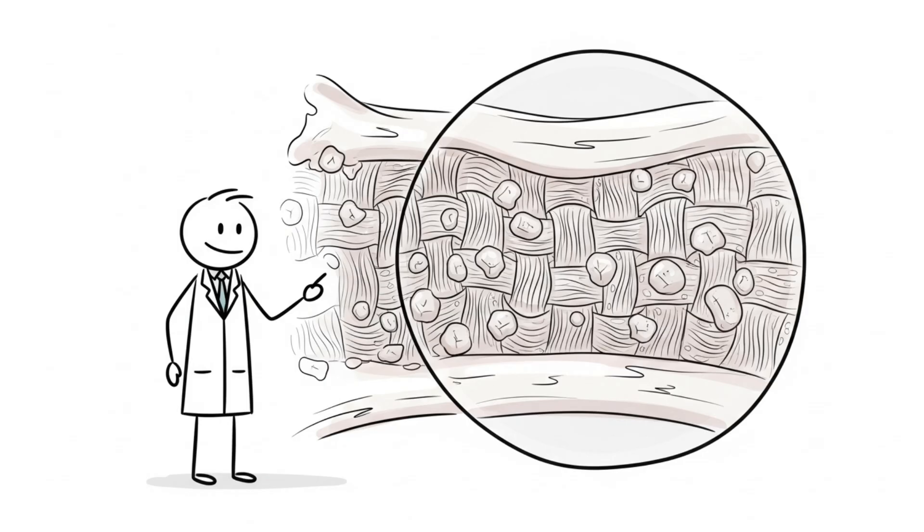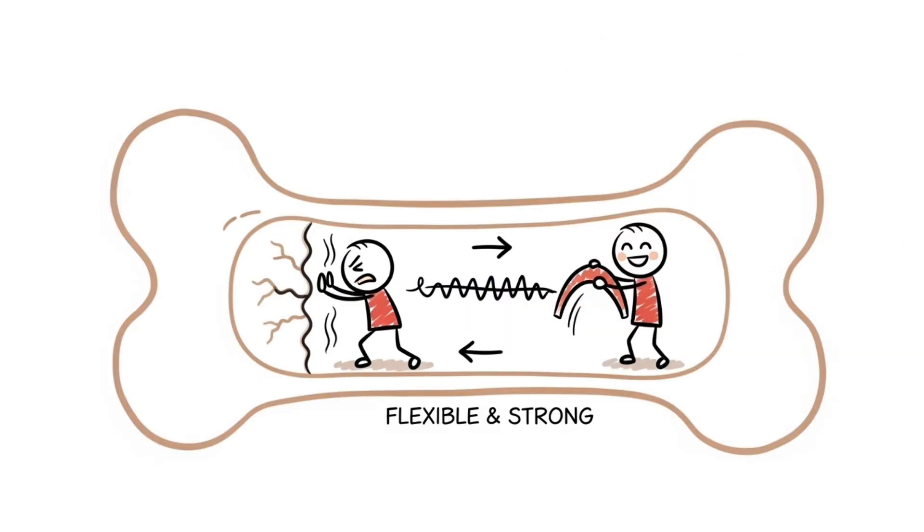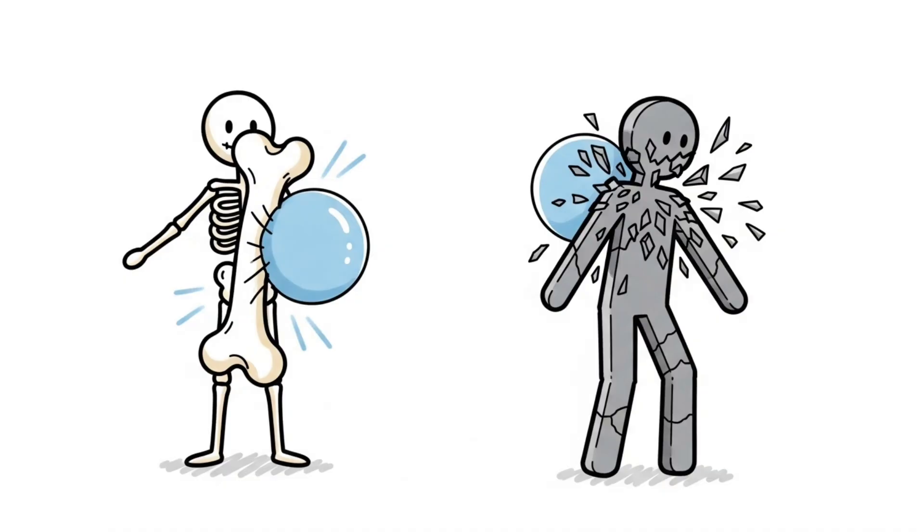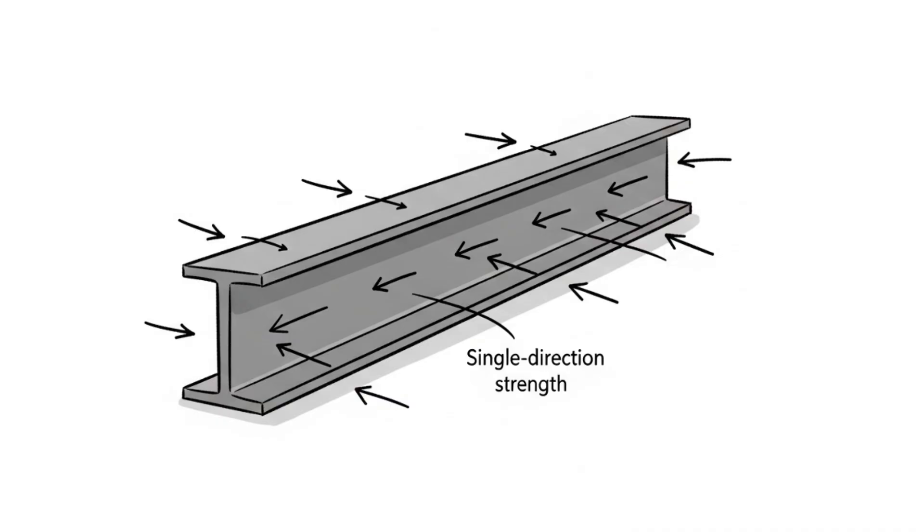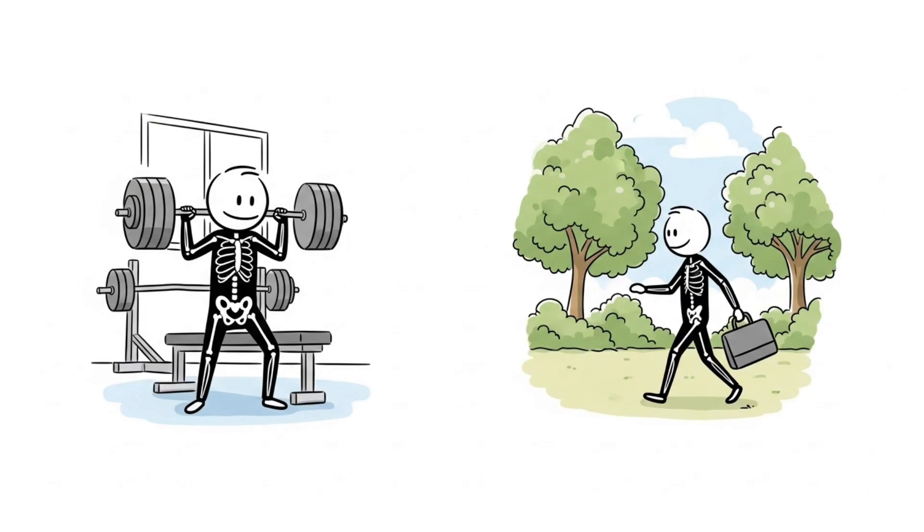Bone is a composite made of collagen and minerals, which makes it both flexible and strong. That combination lets you survive impacts that would shatter metal. Steel gets optimized for strength in one direction. Your bones got optimized for life.